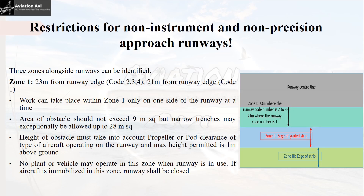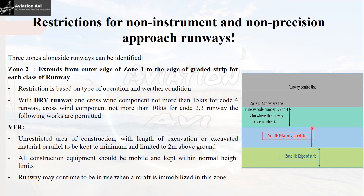Zone 2 extends from the outer edge of zone 1 to the edge of the graded strip for each class. Restriction of operation in zone 2 depends on the type of weather and the type of operation taking place. Considering a dry runway with crosswind component not more than 15 knots for a code 4 runway, and not more than 10 knots for a code 2 or 3 runway — if there are VFR operations, there is unrestricted area of construction, but the length of excavation or excavated material parallel to the runway should be kept to a minimum, and the maximum height of excavated material can be 2 meters from the ground. All construction equipment in zone 2 should be mobile and kept within normal height limits.